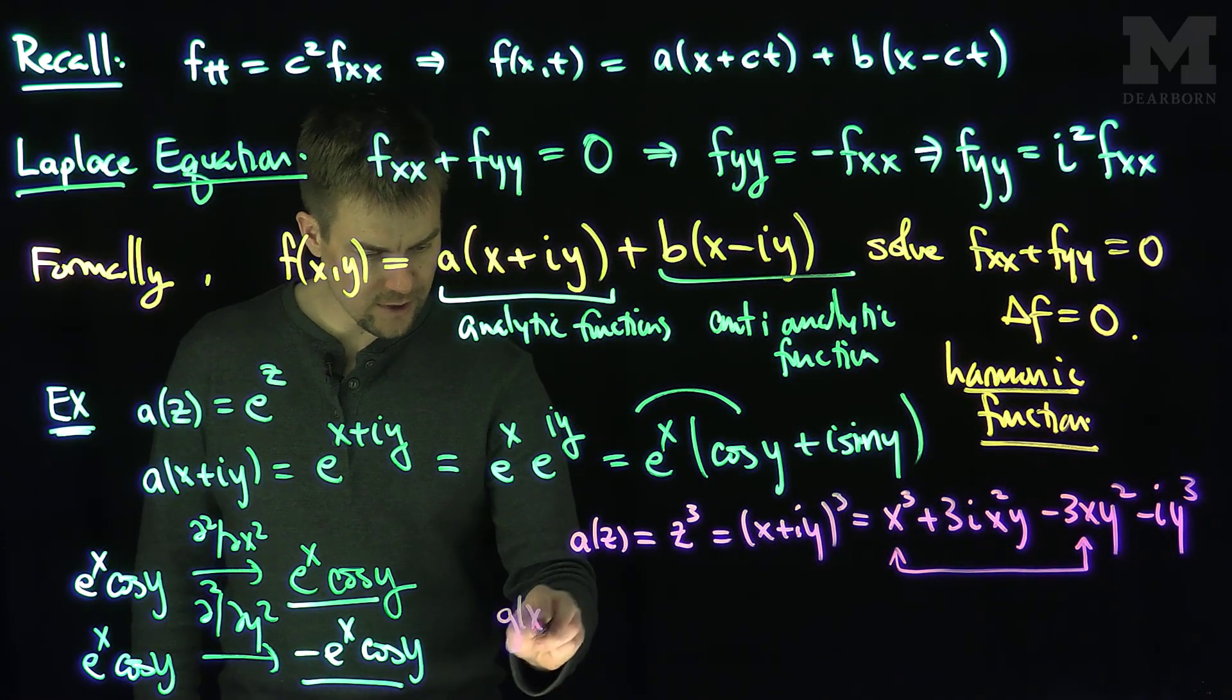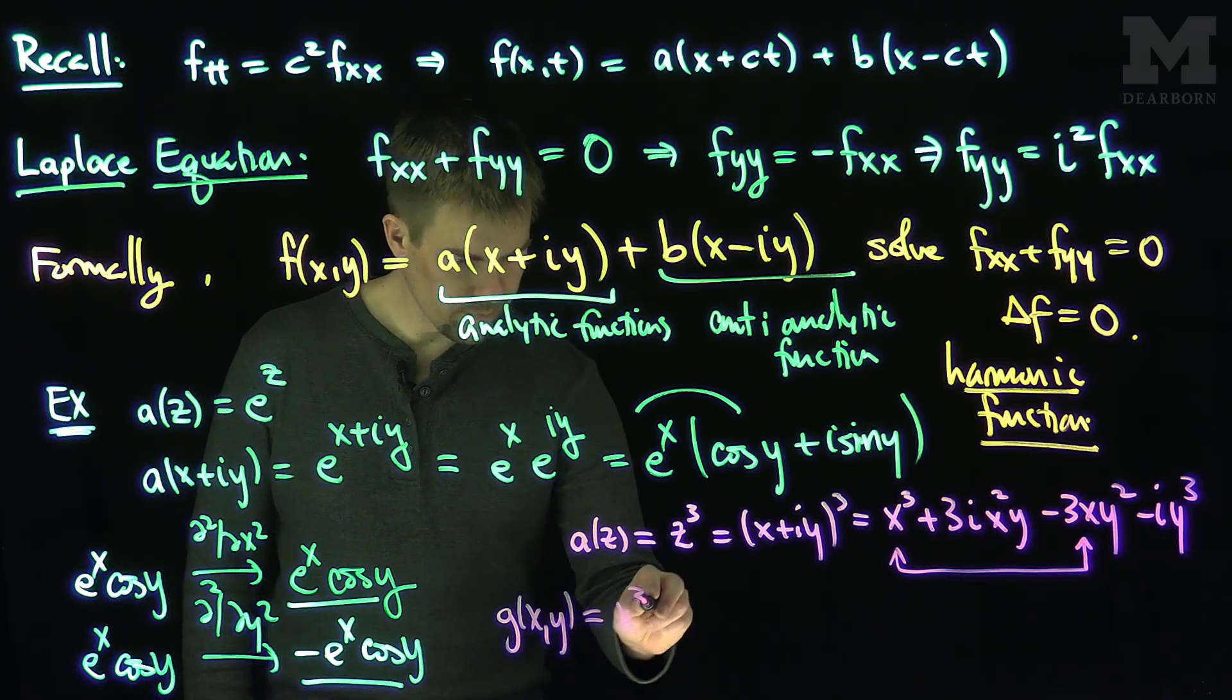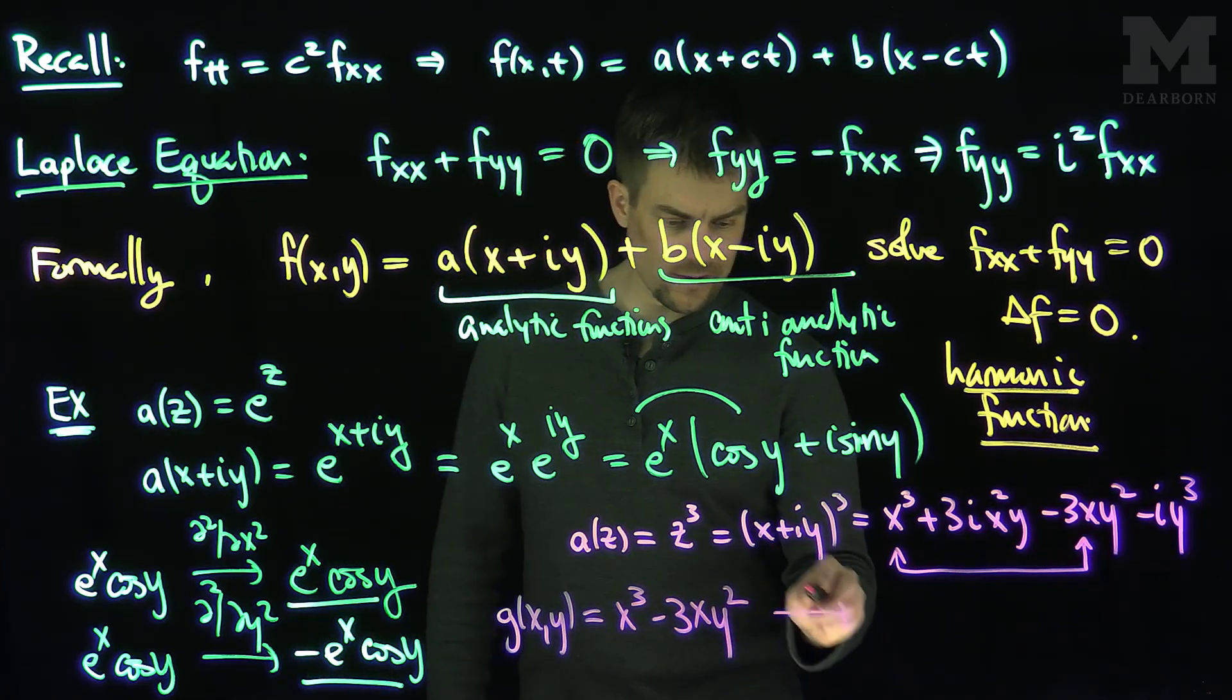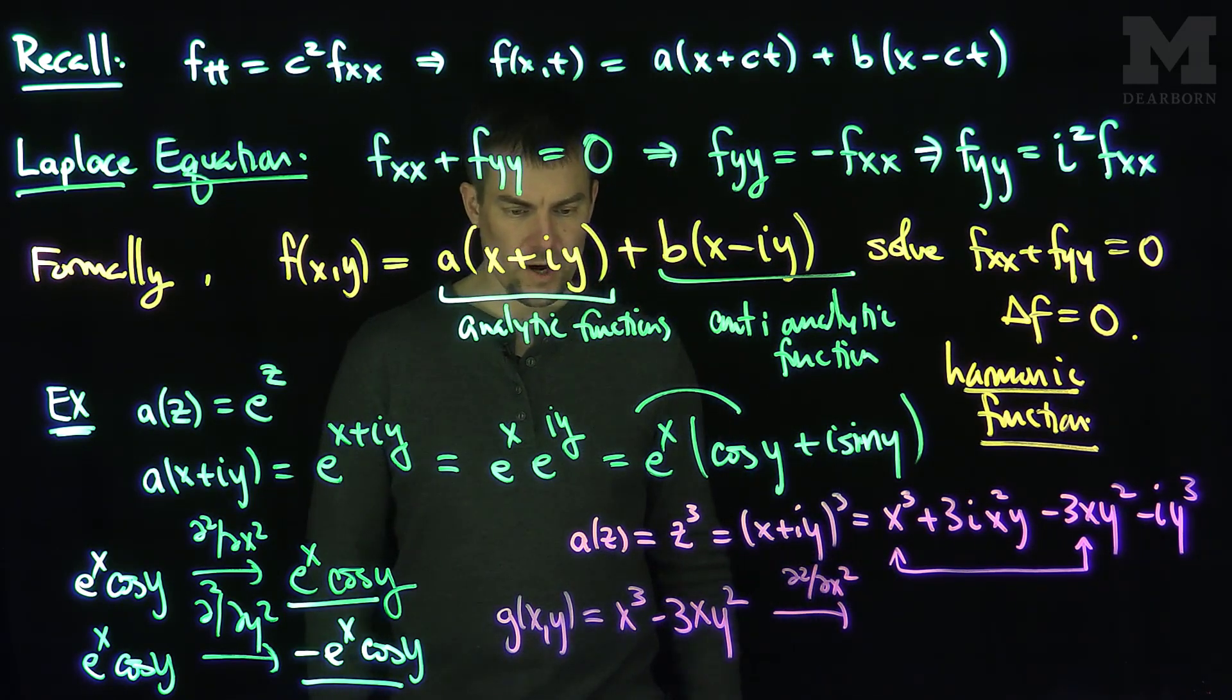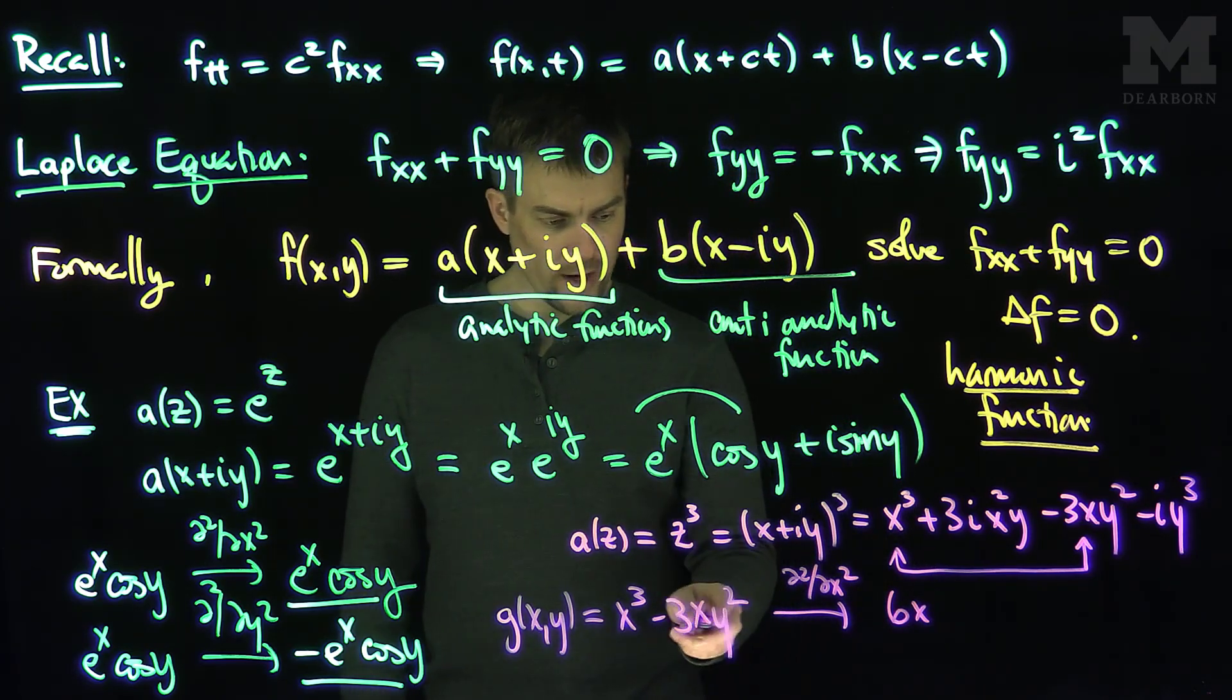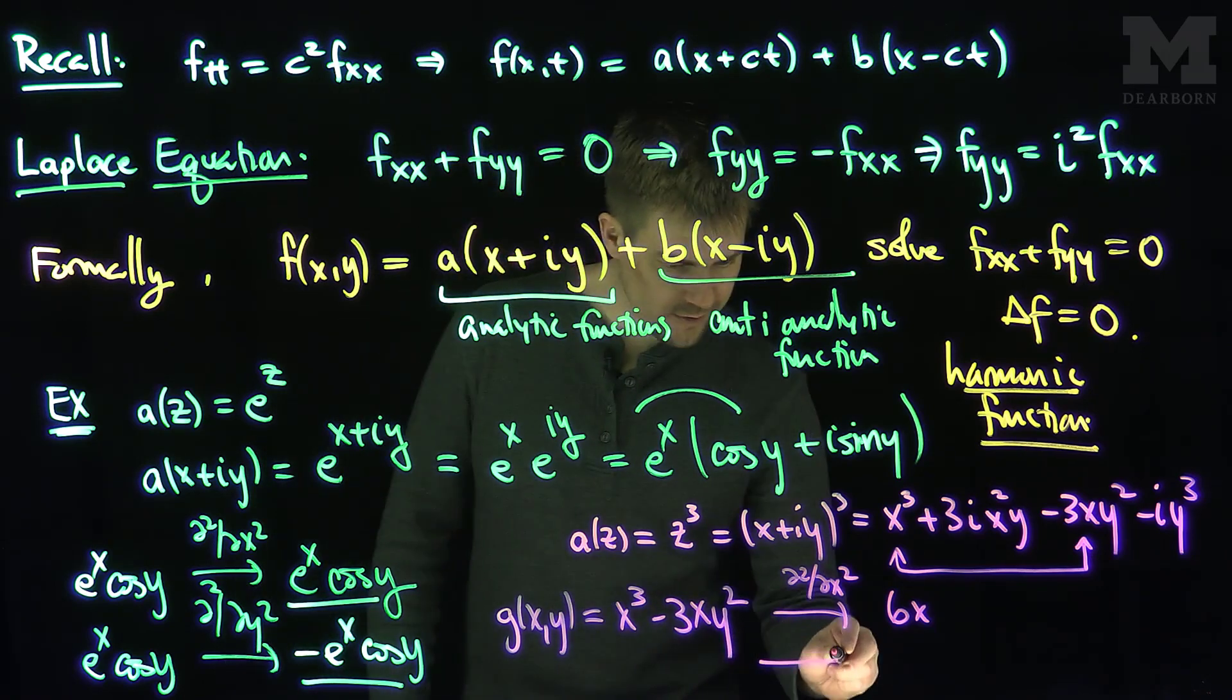So if I look at this function over here, g(x,y), which is x cubed minus 3xy squared. If I do two x derivatives of this, let's see what will happen. Two x derivatives will give me what? The first term will be 3x squared, and then I'm going to give me 6x, so I'm going to have 6x. And if I do two x derivatives of this term over here, I'm going to get nothing.